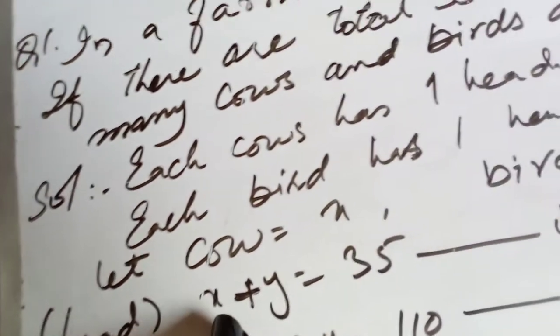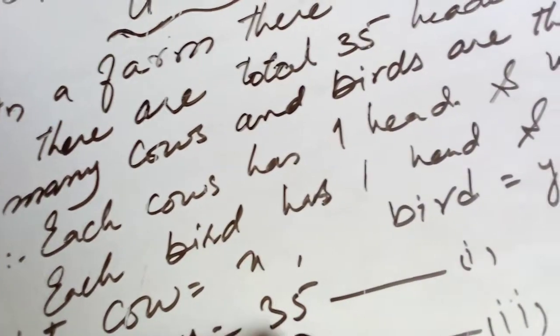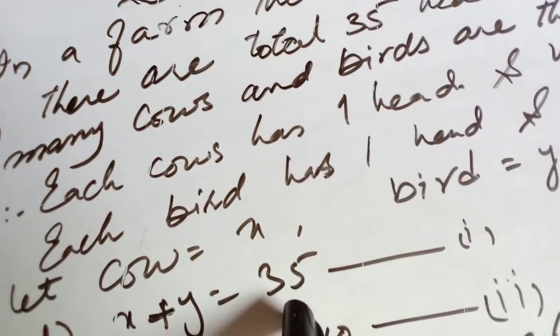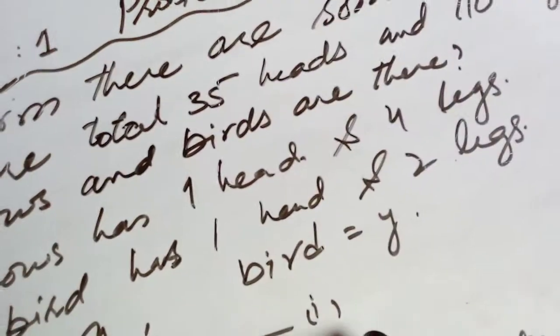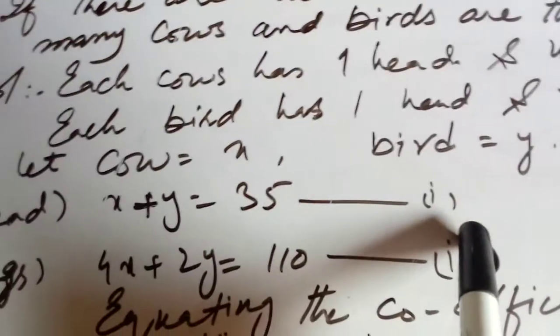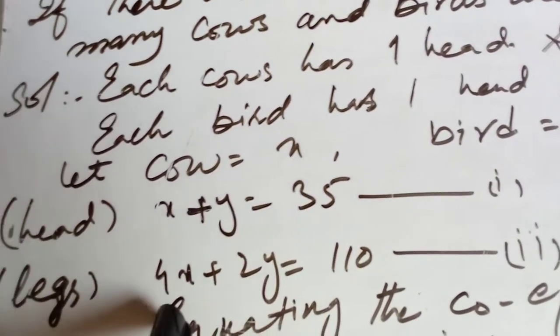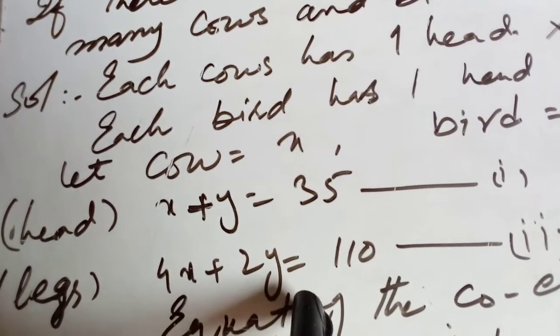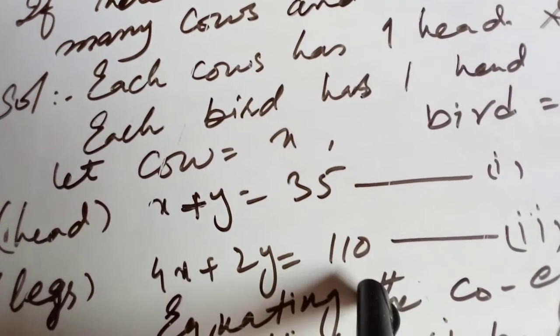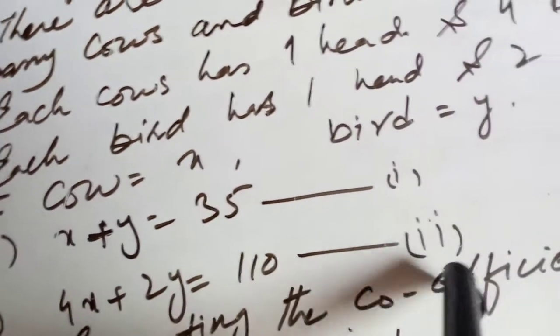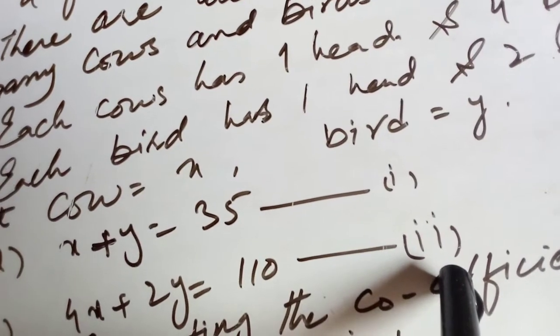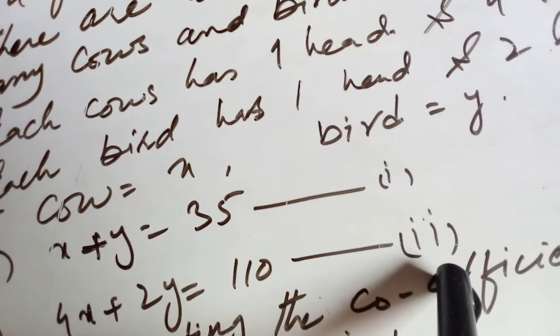For the heads: x plus y is equal to 35. This is our equation 1. For the legs: 4x plus 2y is equal to 110. This is our equation 2.